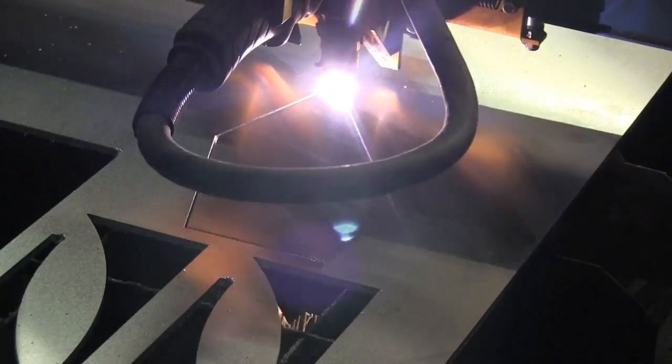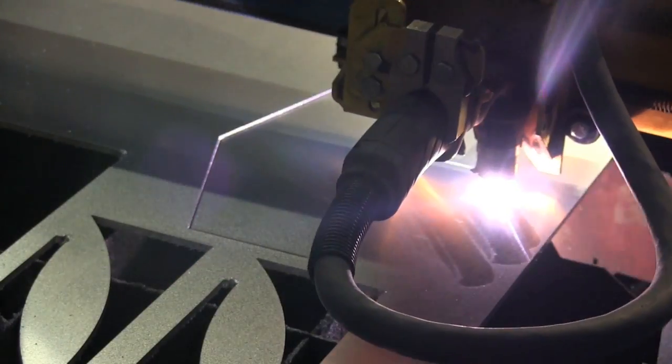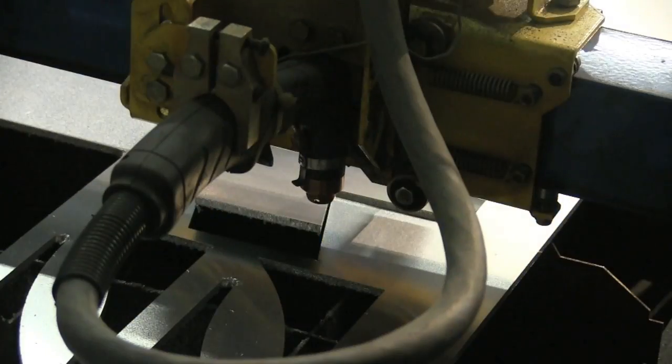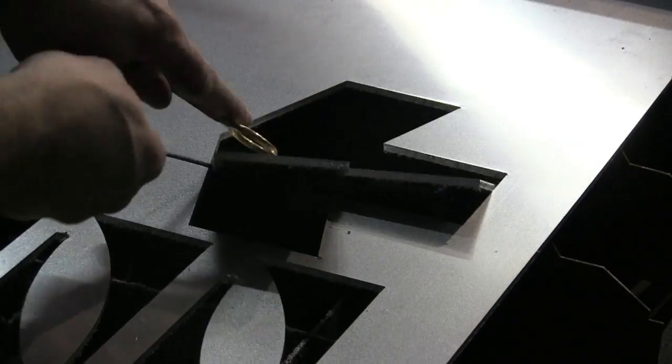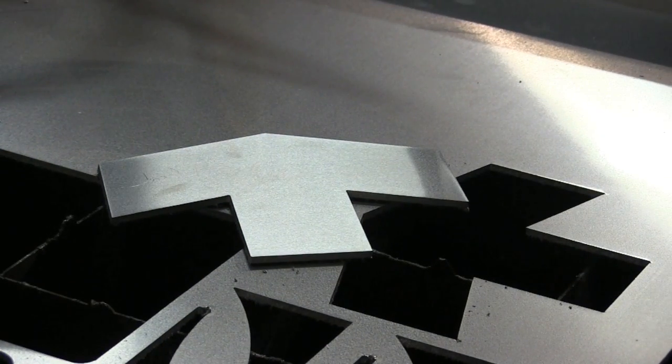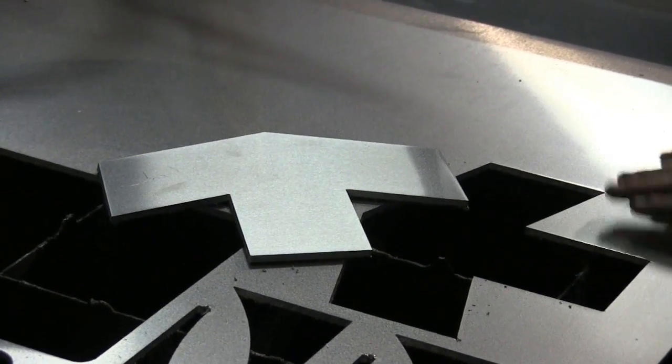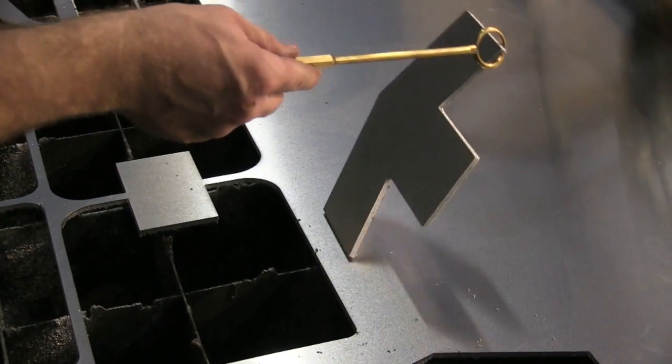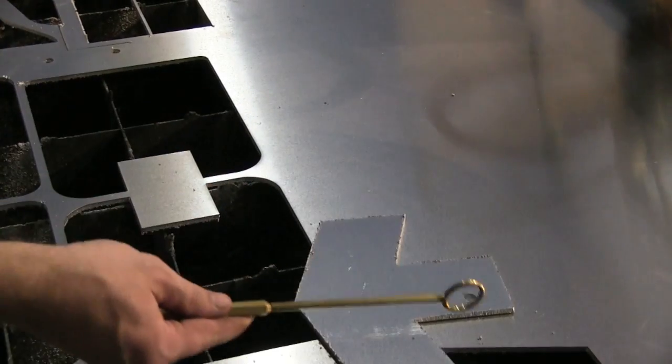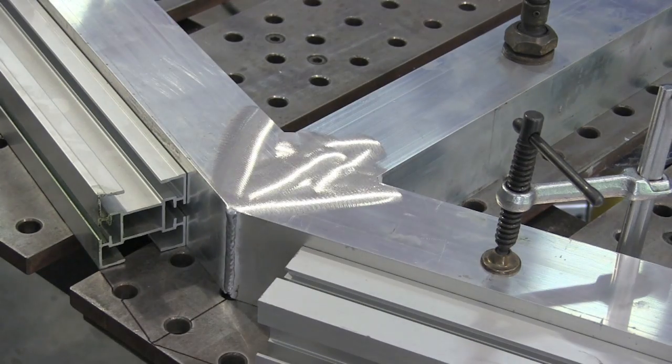And this is sped up, it doesn't cut quite this fast. But it sure did put a nice crisp edge on that aluminum. Aluminum doesn't typically cut quite as good as steel, but this is just a nice sharp edge. We took a flap disc and cleaned all that dross off prior to welding. It didn't take much at all.